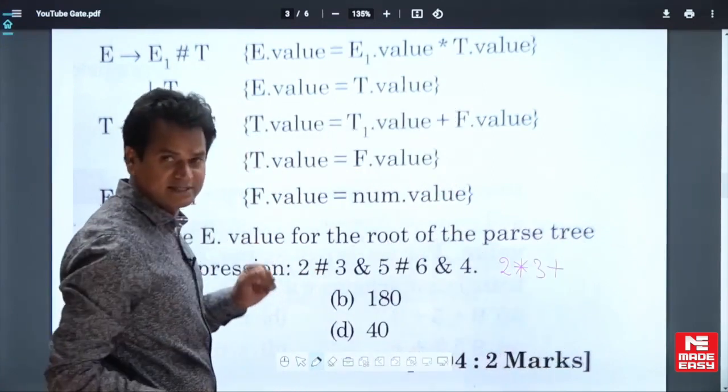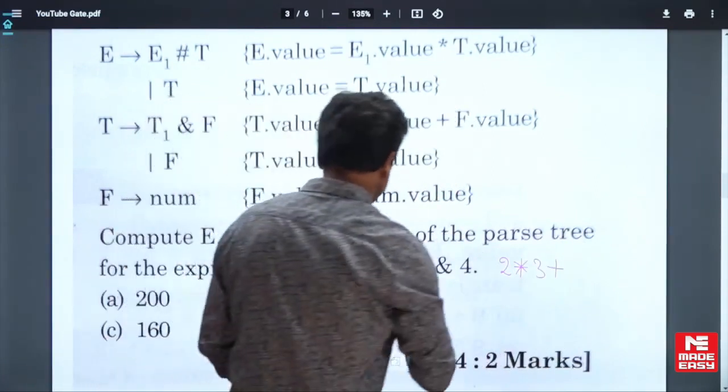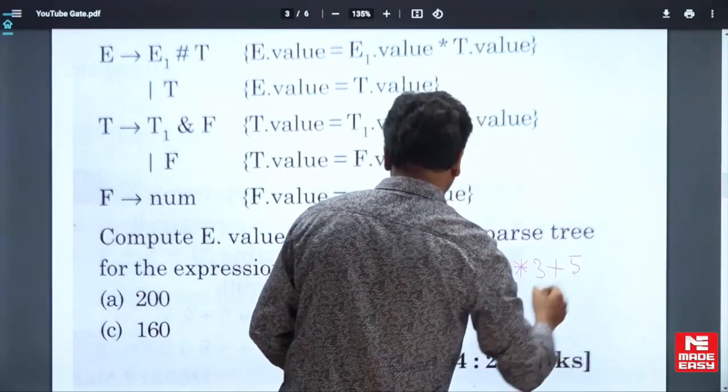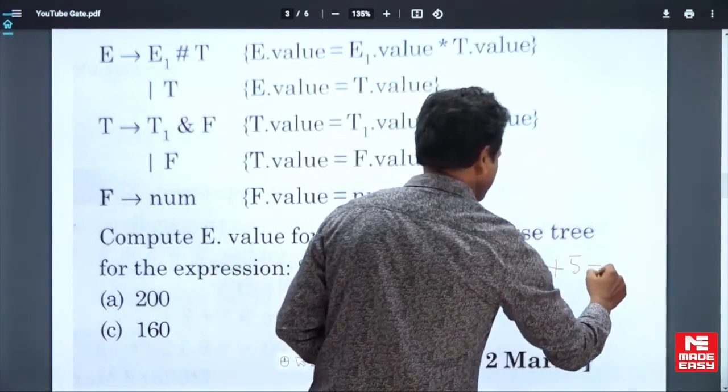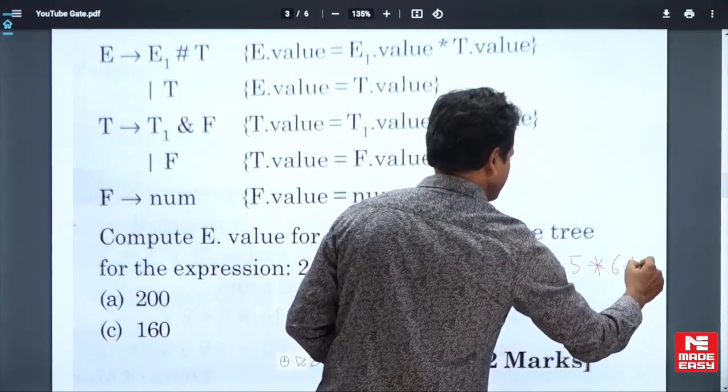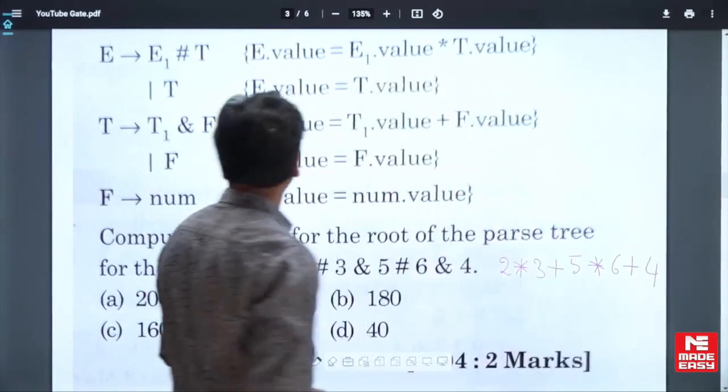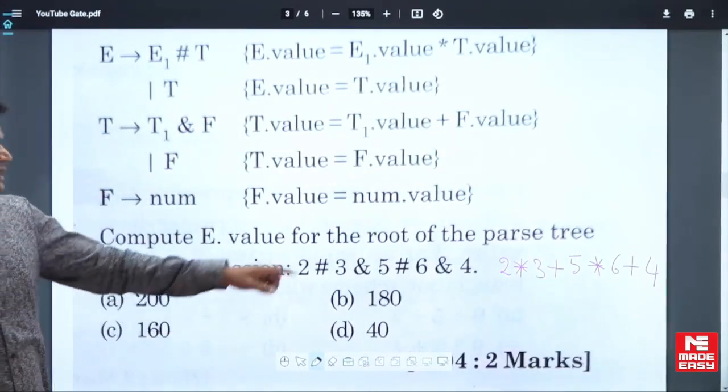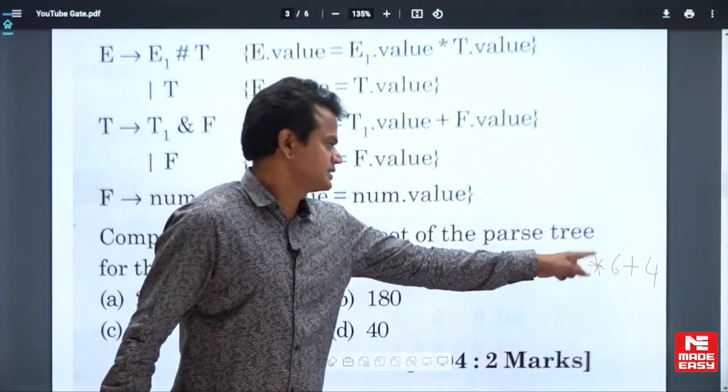5 hash 6 ampersand 4. This is the expression: 2 into 3 plus 5 into 6 plus 4.